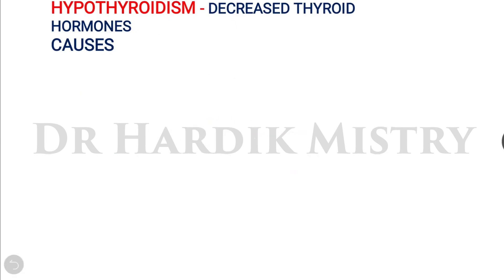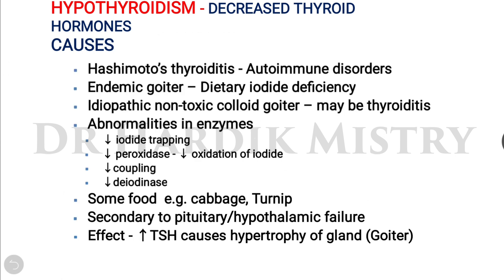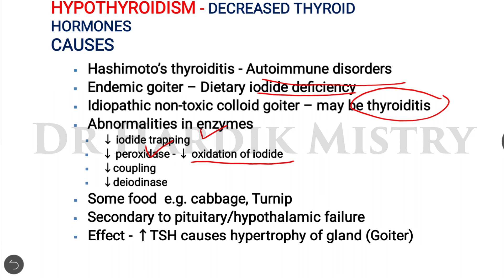The second condition is hypothyroidism, where there is a decrease in thyroid hormones. Causes include Hashimoto's thyroiditis (an autoimmune condition), endemic goiter due to dietary iodine deficiency, and idiopathic non-toxic colloid goiter. In thyroiditis, the enzymes regulating iodine mechanisms are damaged, with decreased peroxidase activity leading to decreased iodine oxidation, decreased coupling, and decreased deiodinase activity.